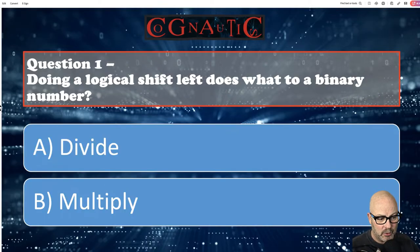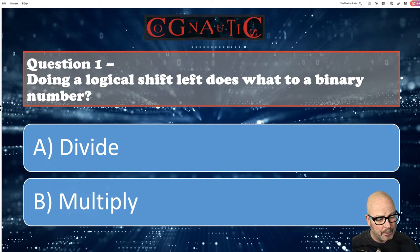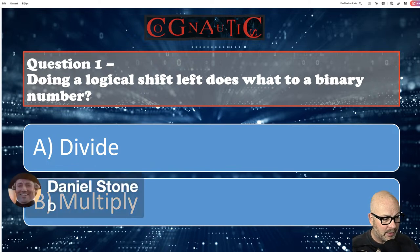Let's try and get through these nice and quickly. Logical shifts. Doing a logical shift left does what to a binary number? It's a 50-50, ladies and gentlemen — we've got five in. A logical shift left — this is an area where you can just start to harvest these marks, because all you've got to do is add zeros to a number. What do we think? Dan's gone for B — let's see if he is correct. And the answer is B.